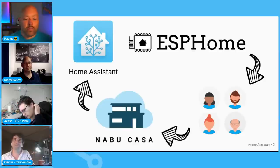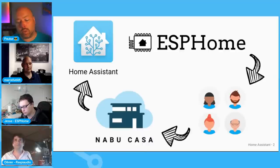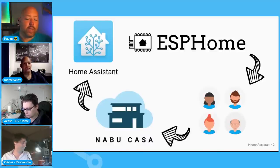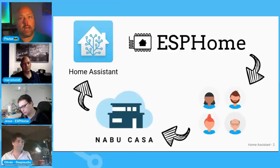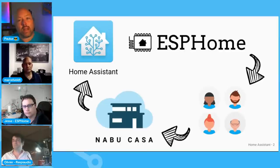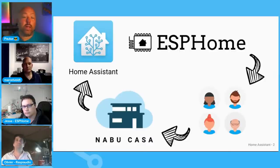Home Assistant is open-source home automation; ESPHome is open-source microcontroller configuration — you can configure microcontrollers easily, integrated into Home Assistant or other projects. Both are free to install and use. Home Assistant has about half a million installations worldwide. At some point the project got so big we couldn't run it in our spare time, so I created Nabu Casa — a company that exists to maintain and fund the development of both Home Assistant and ESPHome.